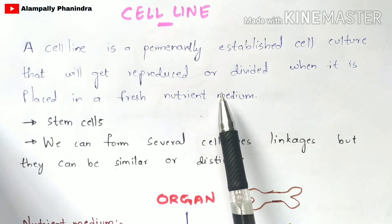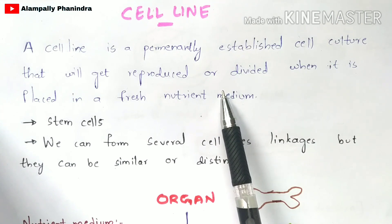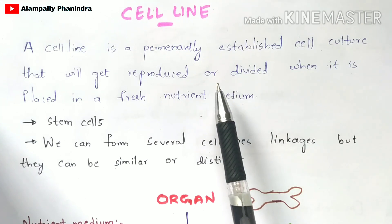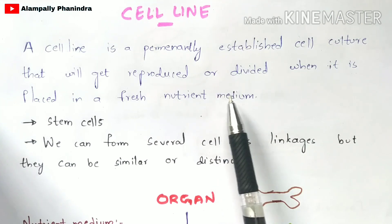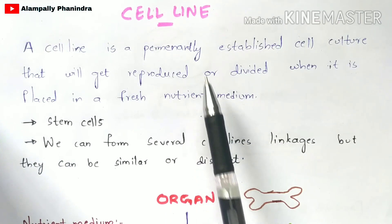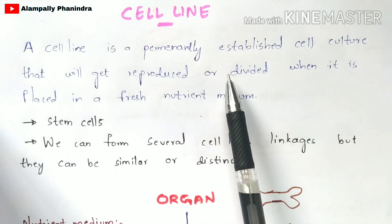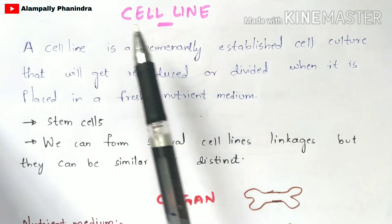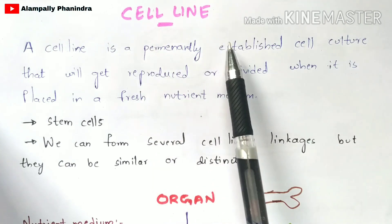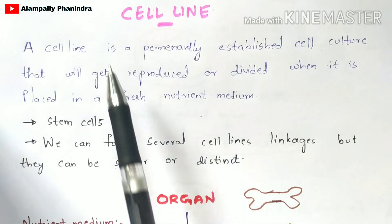The nutrient medium consists of many nutrients like carbohydrates, proteins, vitamins, growth factors, antibiotics, and peptides. It is mainly supplied to the cells so that the cells will undergo reproduction, division, or proliferation to form the cell lines.